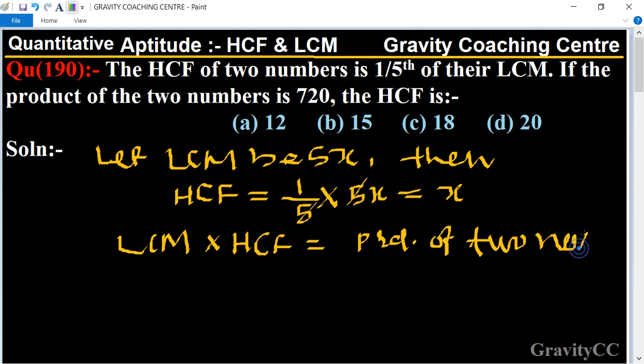So here the product of two numbers is 720, and LCM equals 5x, and HCF equals x.